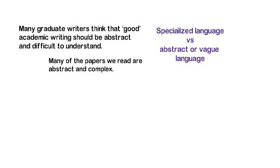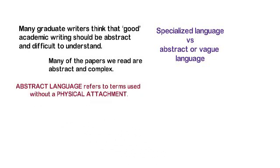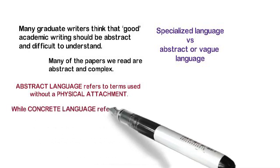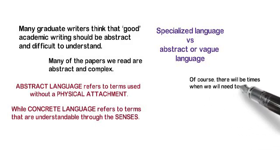Specialised language is when you develop expertise in a particular area and you're talking to others who have similar expertise in a language that everybody understands. Abstract language can look like specialised language but it can be really vague. Abstract language refers to terms used without a physical attachment, while concrete language refers to terms that are understandable through the senses.